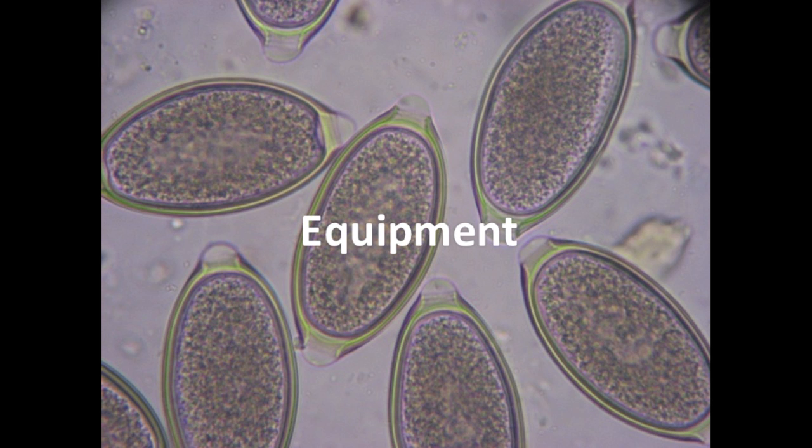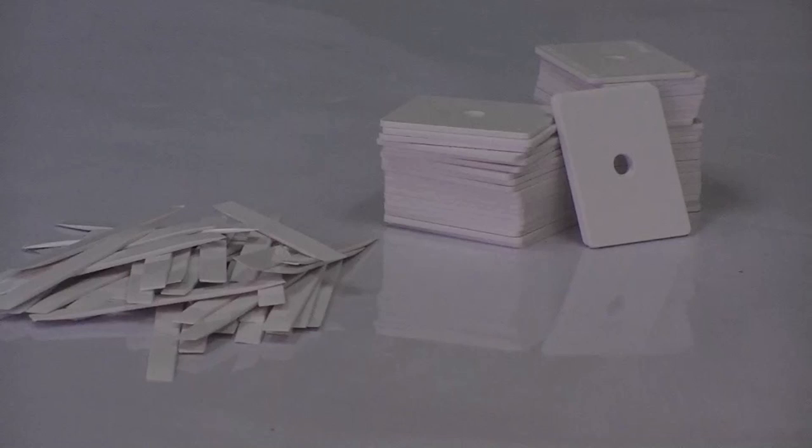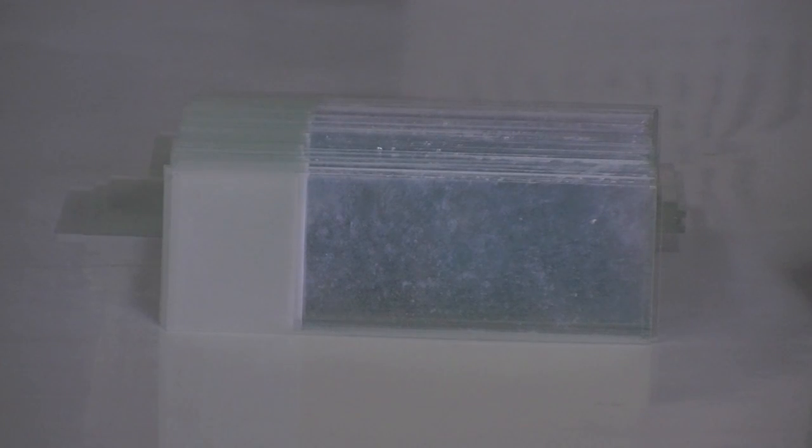Equipment. To perform a Kato-Katz thick smear the following equipment is needed: scrap paper or a newspaper, a 1.5 millimeter thick template with a hole of 6 millimeters, a flat sided spatula, and microscope slides.